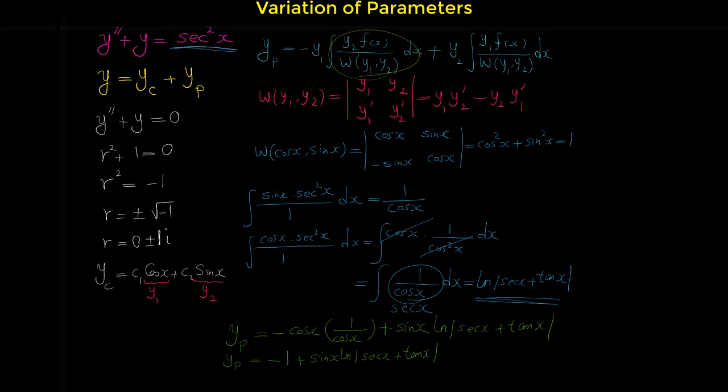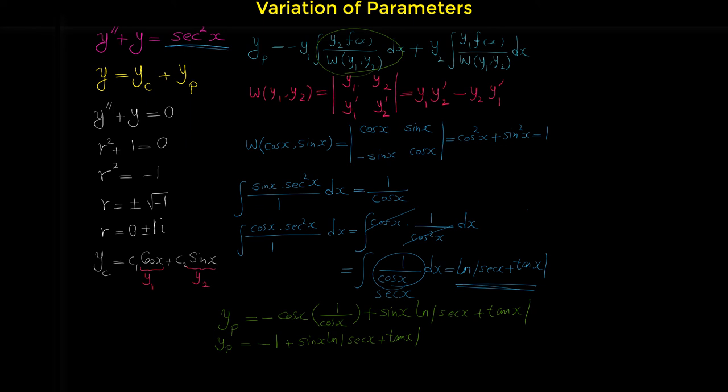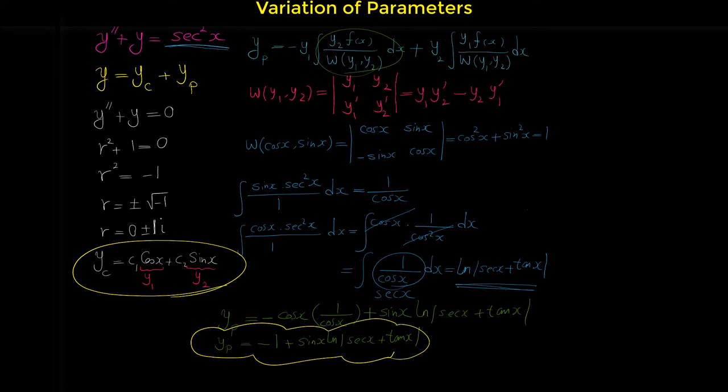Now, if we add the particular solution to the complementary solution, we obtain the general solution. The general solution is the sum of the complementary solution and the particular solution.